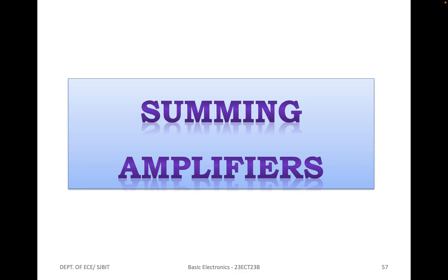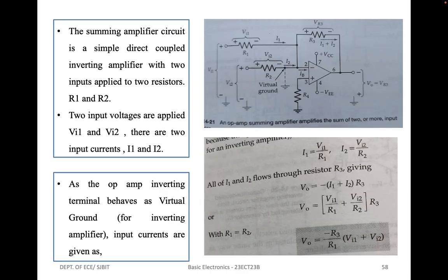First, summing amplifiers. Here we have a circuit for a summing amplifier. Basically, the summing amplifier is simply a direct coupled inverting amplifier with two inputs applied to two resistors R1 and R2, with two input voltages VI1 and VI2. There are two input currents I1 and I2, because the op-amp inverting input terminal behaves as a virtual ground. As for an inverting amplifier, the input currents can be given as: current I1 flowing through resistor R1, and current I2 flowing through resistor R2.